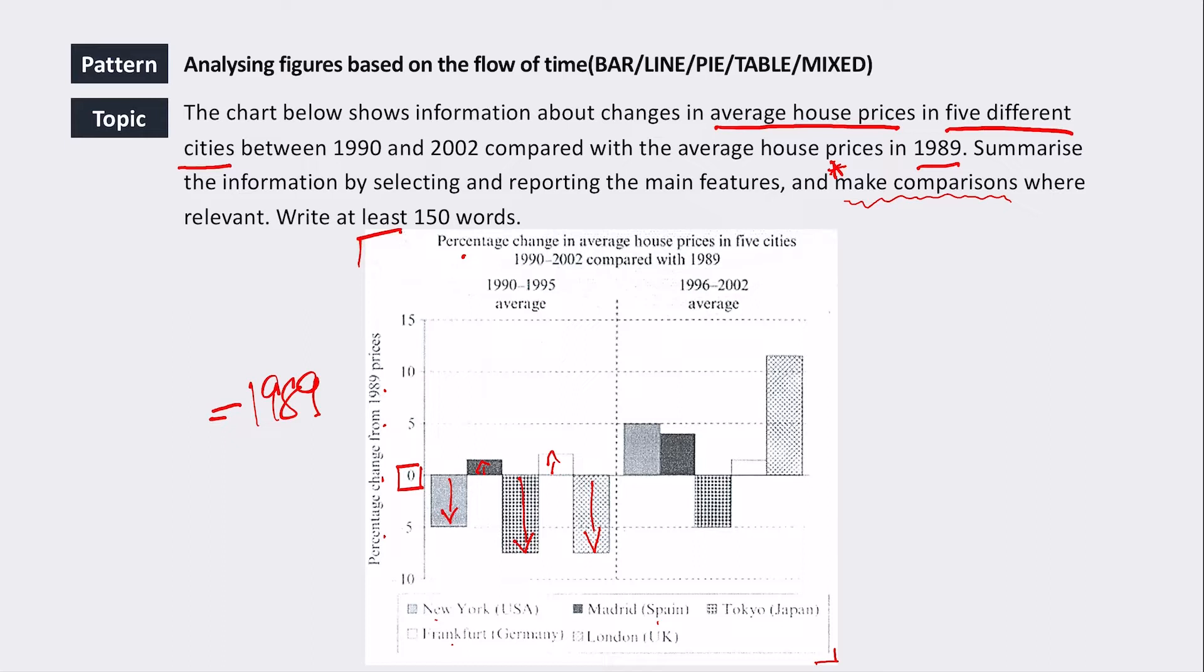Then when we look at 1996 to 2002, we can see that New York changes and gets more expensive. Madrid is still expensive. Tokyo is still cheaper. And Frankfurt has gone up. And London has gone up a lot. So one thing I always tell my students to check is check the dates. Everything that you write is going to be in the past tense. So make sure that you go through and when you're double checking your answer after you finish reading it, double check that everything you wrote is in the past tense.